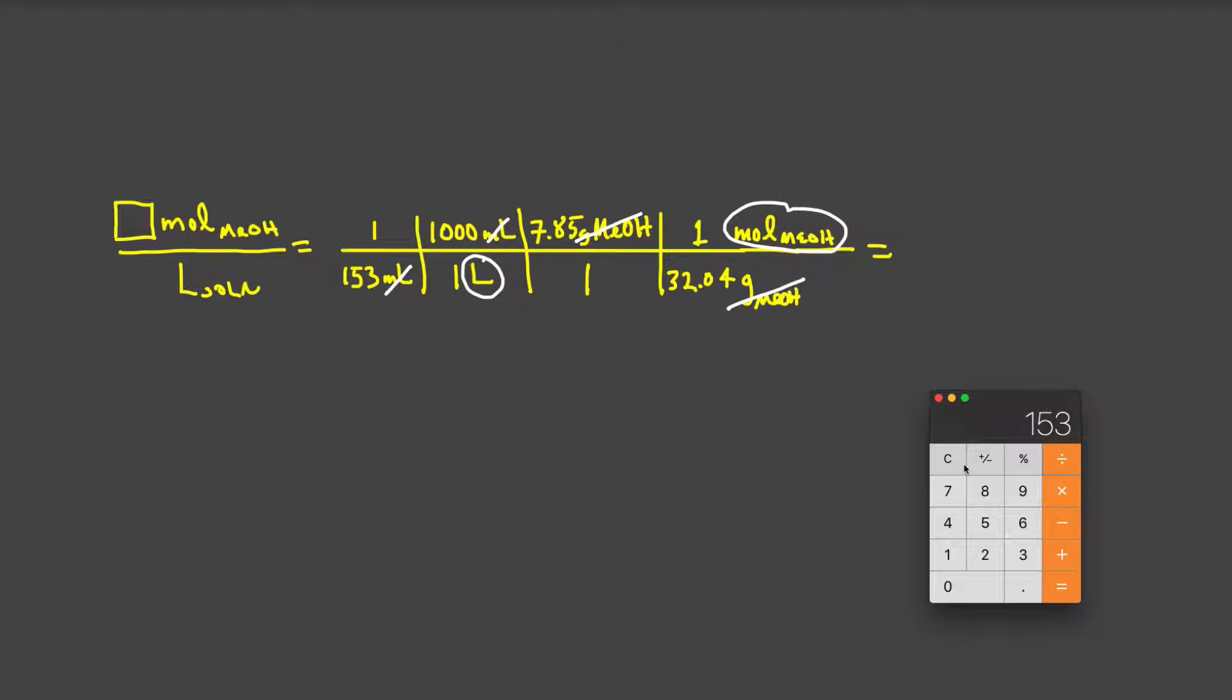I need to divide 153 into 1, and I need to multiply that by 1,000. And I need to multiply that number by 7.85. And I need to then divide that number by 32.04. And the number I get is 1.6013, and it continues on. But I only need to report to the proper number of significant figures, which in this case is going to be 3. So this answer becomes 1.60 moles per liter. And since I'm at my final answer, I can replace moles per liter with an M for molar units.